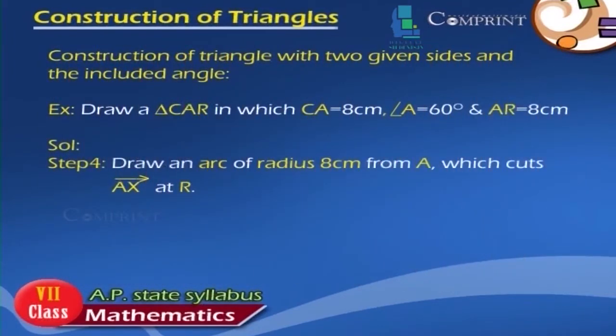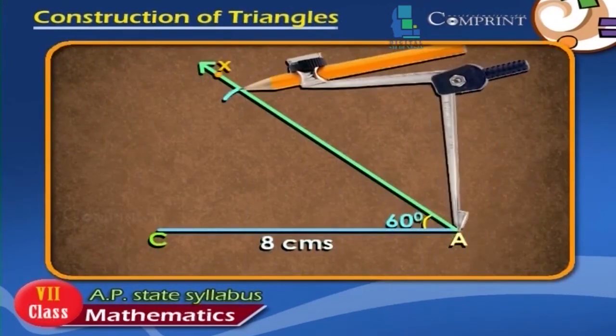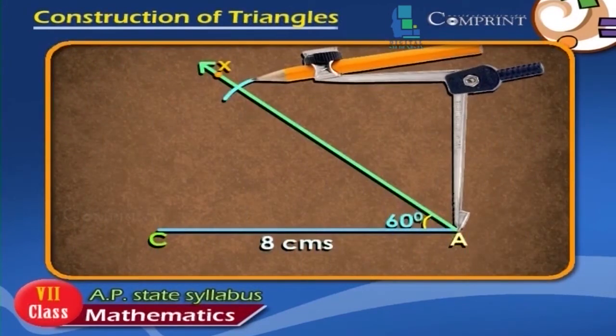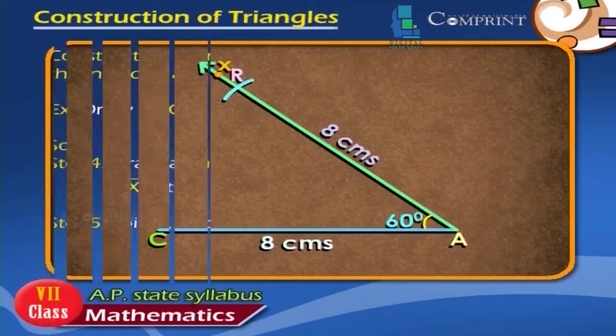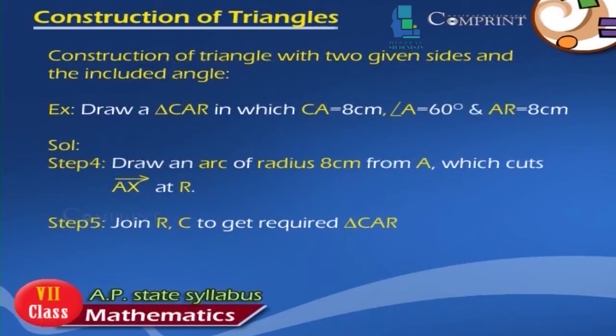Step 4: Draw an arc of radius 8 cm from A which cuts AX at R. Step 5: Join RC to get the required triangle CAR.